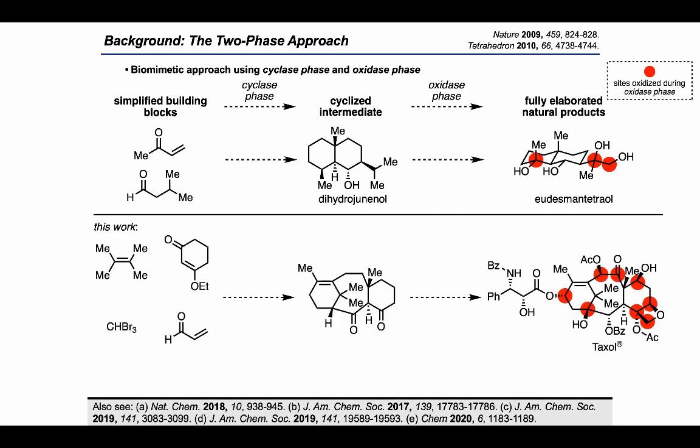Applying that synthetic logic to taxanes, the Baran group wanted to ultimately show that using a different series of simple building blocks, a relatively unfunctionalized cyclic intermediate could be synthesized and would provide access to a wide range of taxane targets including taxol. The first step in bringing this plan to fruition was to establish a route to that cyclic intermediate.